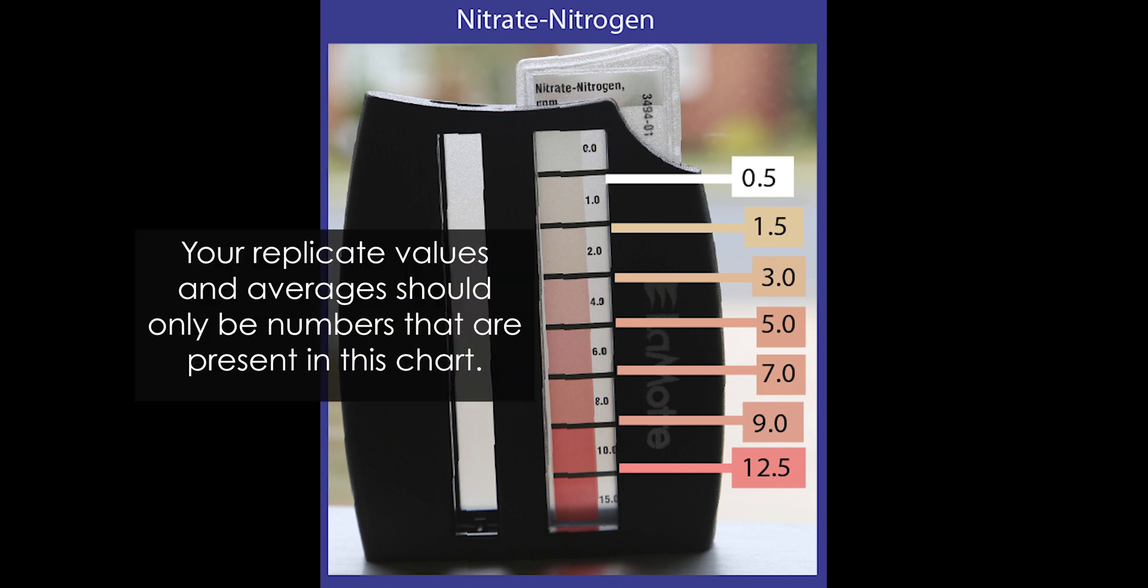For instance, if your average comes out to 1.75, that value is not represented by either 1.0, 1.5, or 2.0, and should be rounded up to 2.0 for precision's sake.